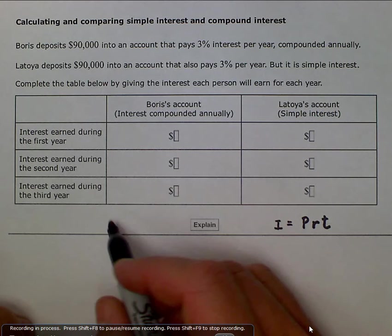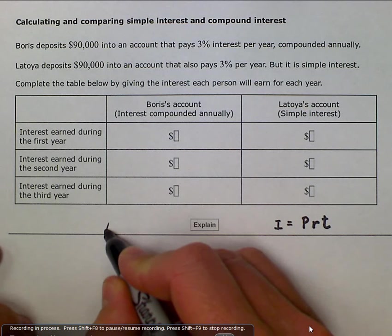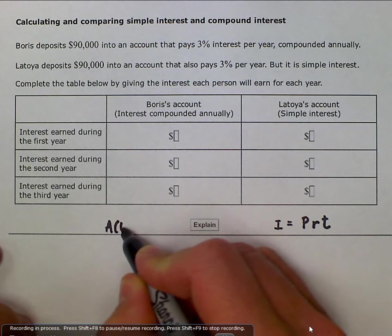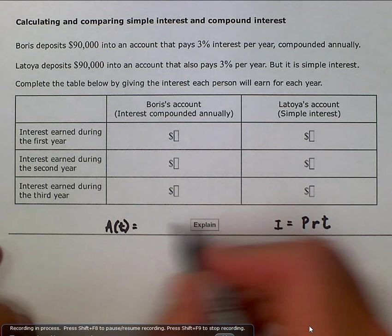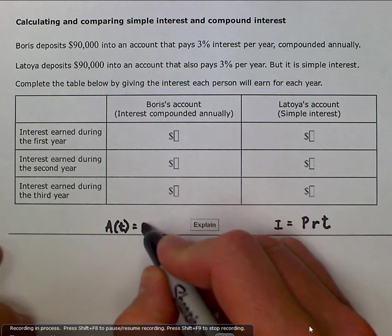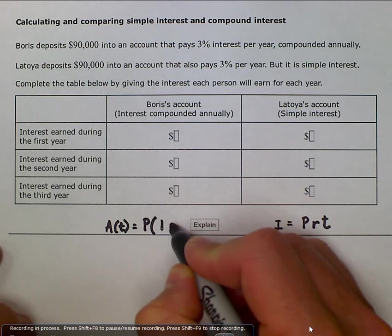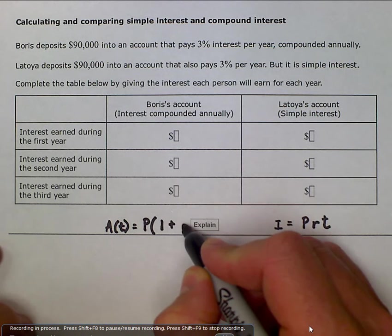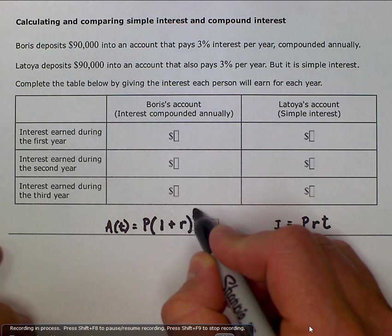Whereas our compound interest, the amount is a function with relation to time, and it is going to be the original principal, but it is going to be multiplied by 1 plus the rate raised to the exponent of time.